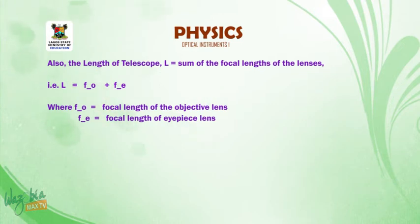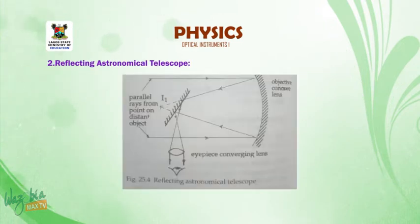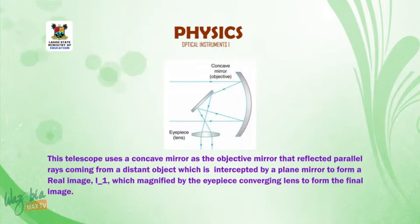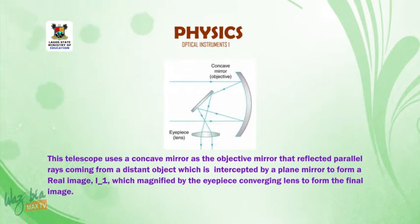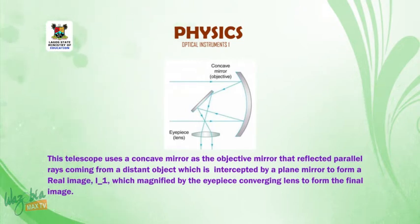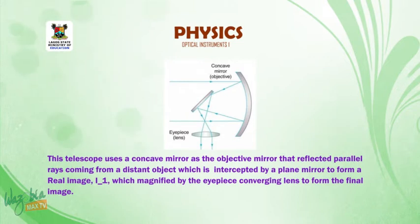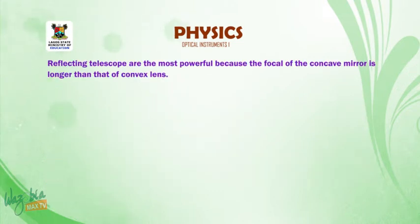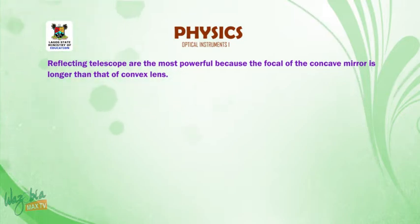Number two: the reflecting astronomical telescope. This telescope uses a concave mirror as the objective mirror that reflects parallel rays coming from a distant object, which is intercepted by a plane mirror to form a real image I1, which is then magnified by the eyepiece converging lens to form the final image I2. Reflecting telescopes are the most powerful because the focal length of the concave mirror is longer than that of the convex lens.